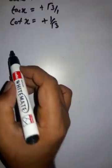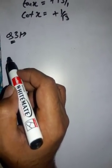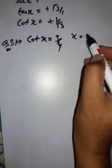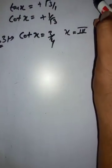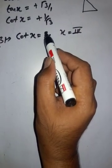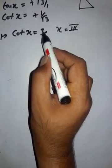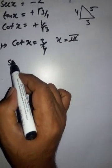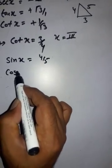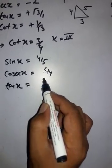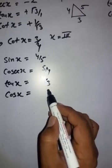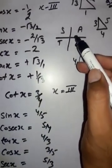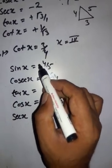Question 3: cot x = 3/4 and x lies in the 3rd quadrant. Since cot is the reciprocal of tan, we have base/perpendicular = 3/4. The hypotenuse = √(16 + 9) = √25 = 5. So: sin x = 4/5, cosec x = 5/4, tan x = 4/3, cos x = 3/5, sec x = 5/3. In the 3rd quadrant, tan and cot are positive; sin, cosec, cos, and sec are negative.